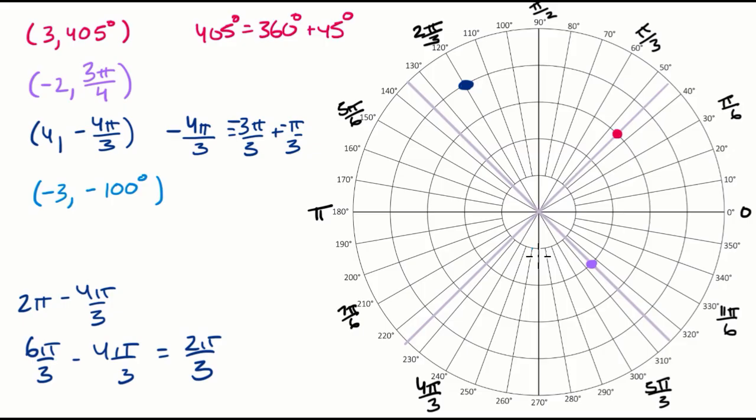And if it was positive three, we would go one, two, three, but it's not, it's negative three. Let me make sure I'm following this properly. So if I follow this line backwards, I get to that line right over there. And so I'm going to go backwards, one, two, three, and get to that point right over there. And we're done.